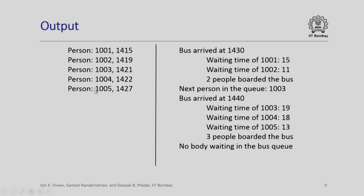The sample output shows: person 1001 arrived at 1414, through person 1005 arriving at 1427. The first bus arrived at 1430 — waiting times for individuals are displayed, 2 people boarded, and the next person in the queue was 1003. The next bus arrived at 1440, waiting times are shown, 3 people boarded the bus, and nobody was left waiting.